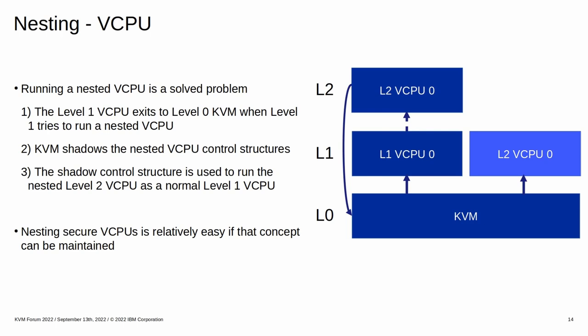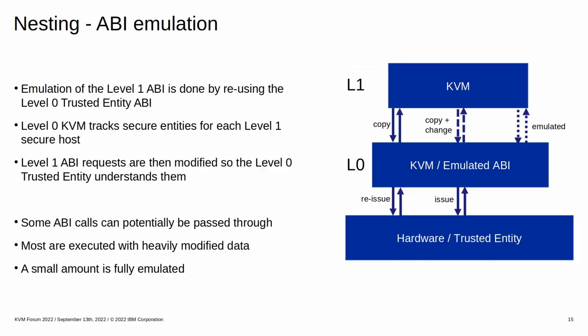As long as starting a secure nested vCPU also exits to level 0, KVM can reuse a lot of the existing nesting code. This is easy on architectures that extended their virtualization instructions and VM control structures for secure VMs rather than introducing new ones. For example, S390 needed about 300 lines of code to support nested secure vCPUs. But the biggest change stems from the emulation of the trusted entity API. The largest part of the emulation is achieved by level 0 manipulating level 1 API requests and issuing them to the real level 0 trusted entity API. A smaller amount of API requests are passed through unmodified, and some requests are fully emulated.